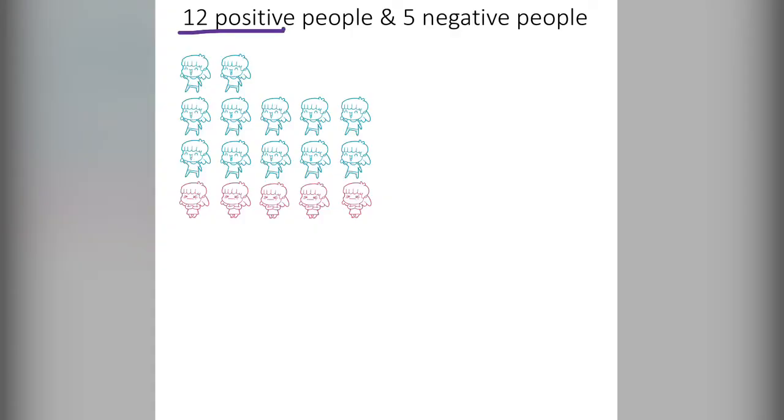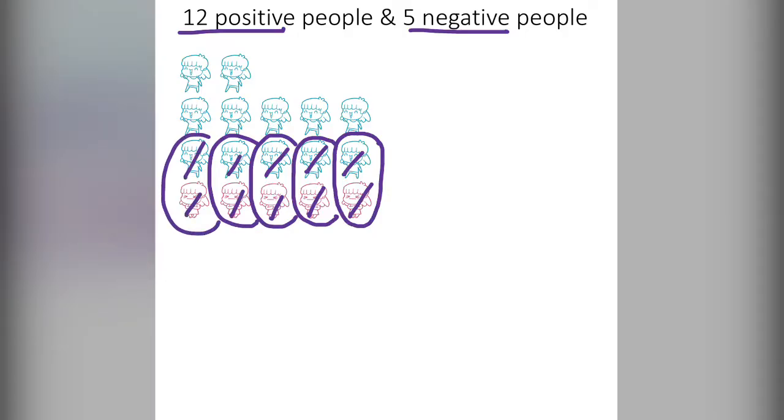12 positive people and 5 negative people will also involve elimination. Every positive person will match up with a negative person and it will be like they neutralize each other out. So I'm going to go ahead and match up all 5 negative people with 5 positive people. Once each of those are eliminated I can count how many I have left. In this case I end up with 7 positive people.